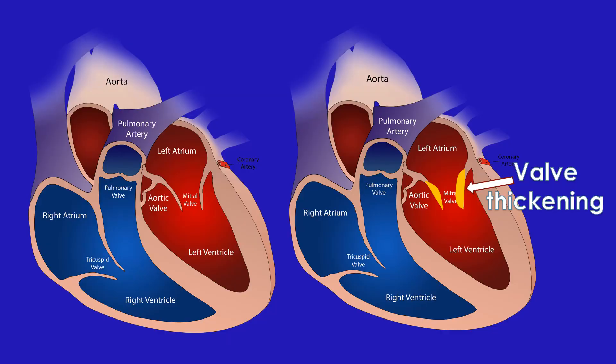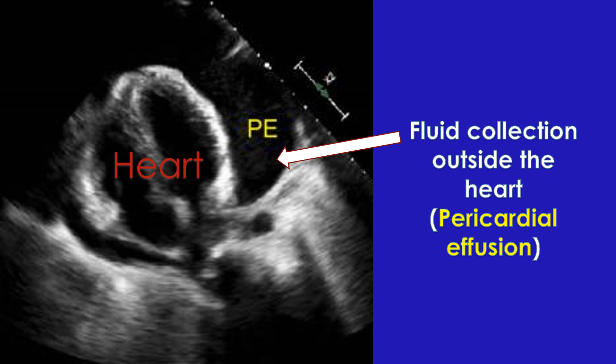Thickening and distortion of valve leaflets is common in diseased valves and may be noted on echo reports. Sometimes the number of leaflets may be abnormal — for example, the aortic valve usually has three leaflets, but if it has only two leaflets by birth, it is called a bicuspid aortic valve. If there is fluid collection between the covering layers of the heart, it is reported as pericardial effusion, with the estimated amount reported as mild, moderate, or large.